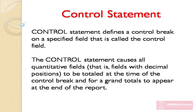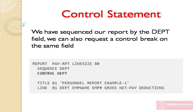Next statement is the Control statement. The Control statement defines a control break on a specified field, called the control field. It causes all quantitative fields — that is, fields with decimal positions — to be totaled at the time of the control break, and for grand totals to appear at the end of the report. Because we have sequenced our report by the department field, we can also request a control break on the same field. This gives us totals of gross, net pay, and deductions for each department. To accomplish this, we add the Control statement and the field name 'department' after the Sequence statement.